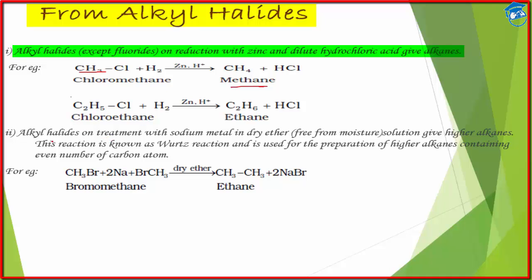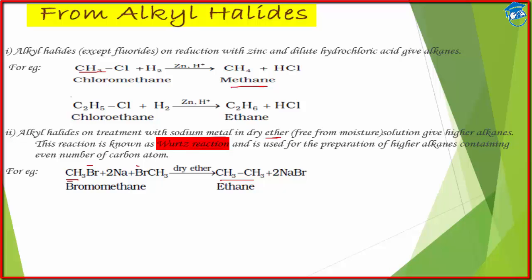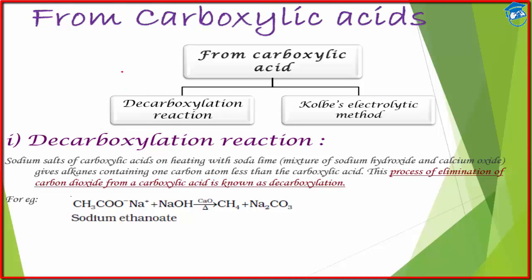Also, if alkyl halides are treated with sodium metal in dry ether solution, they generally give the dimer of the alkyl halide. So if the alkyl halide has one carbon, we get a two-carbon alkane; if it has two carbons, we get a four-carbon alkane, because dimerization occurs — the halogen is removed and the two alkyl groups couple. This process is known as the Wurtz reaction, generally used in industry to prepare higher even-numbered carbon alkanes.